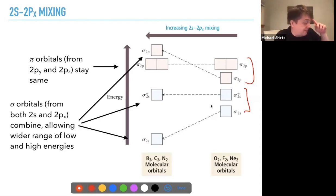But the sigma orbitals from both the 2s and the 2px combined, and because they're combining more, you get a wider range of low and high energies. When they combine, you've got more orbitals into the mix, so there's more potentially low energies and more potentially high energies.